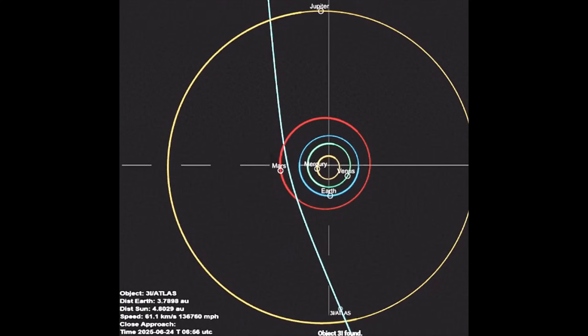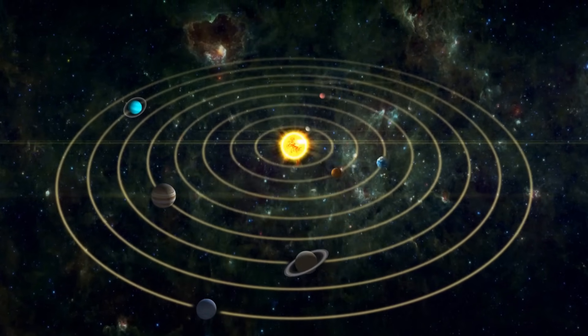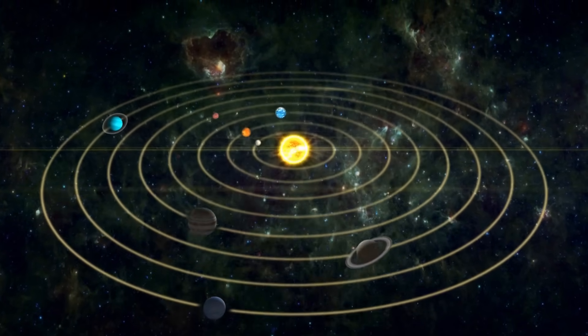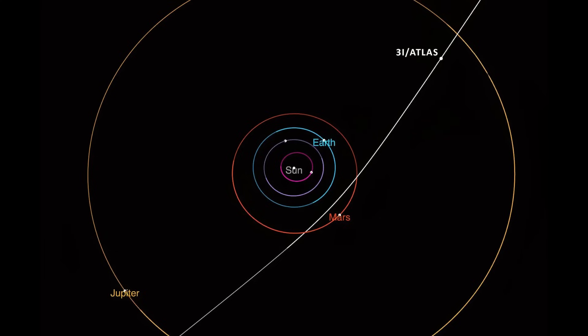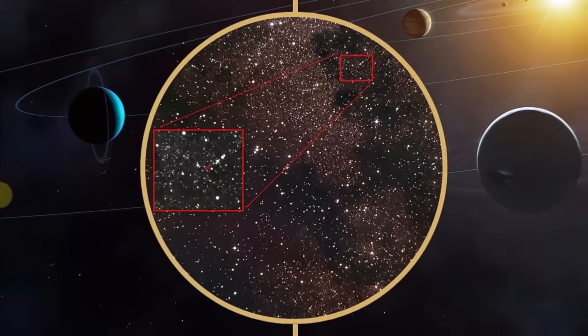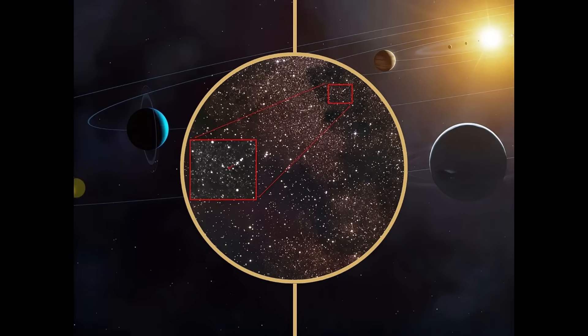Even more compelling is the way 3i Atlas moves. Our solar system is structured like a flat disk, with planets orbiting the sun in nearly the same plane, like grooves on a record. Interstellar objects typically arrive from random directions, their paths tilted at steep angles, cutting across the solar system like darts thrown across a board. 3i Atlas is different. It hugs the solar plane with uncanny precision, aligned within just 5 degrees of the planetary track.